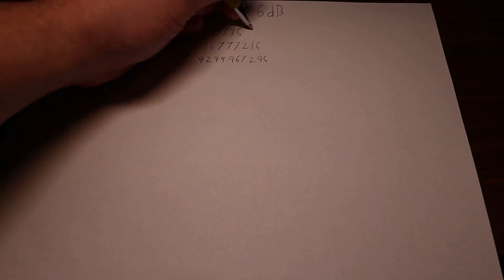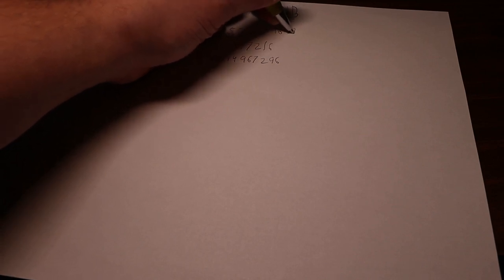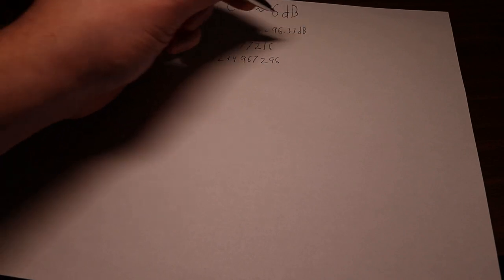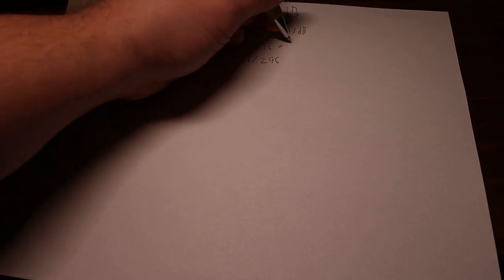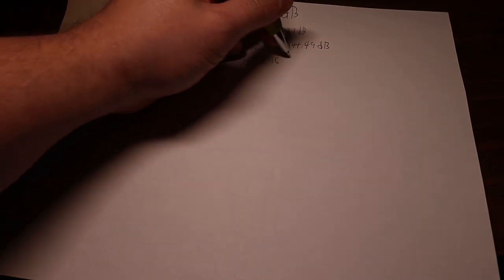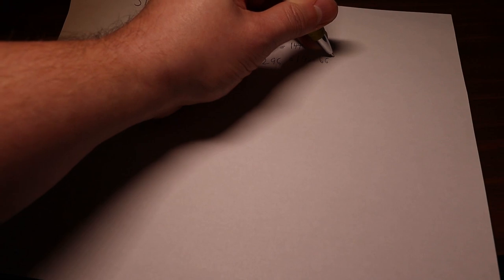So taking these values and then turning them into actual meaningful decibel values: We can take 16 dB equal to 96.33 dB, 24 being equal to 144.49 dB, and 32 being 192.66 dB.